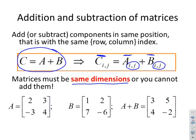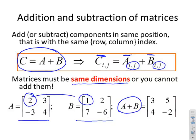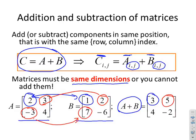Here's an example. A is given and B is given, and I want to find A plus B. I'll take the 1,1 position which has 1 and 2, add those together to get 3. Then the 1,2 position has 3 and 2, add to get 5. The 2,1 position has -3 and 7, add to get 4. Finally the 2,2 position has 4 and -6, add together to get -2.